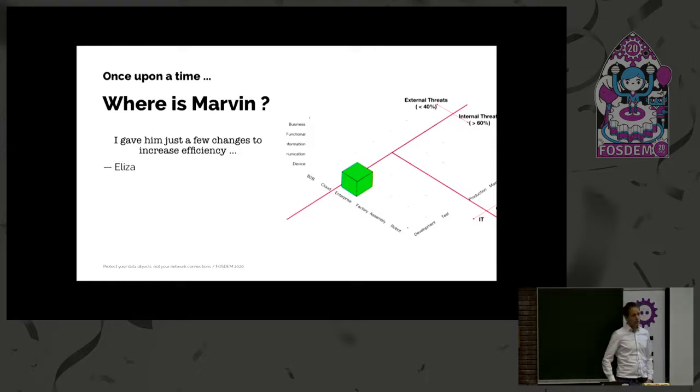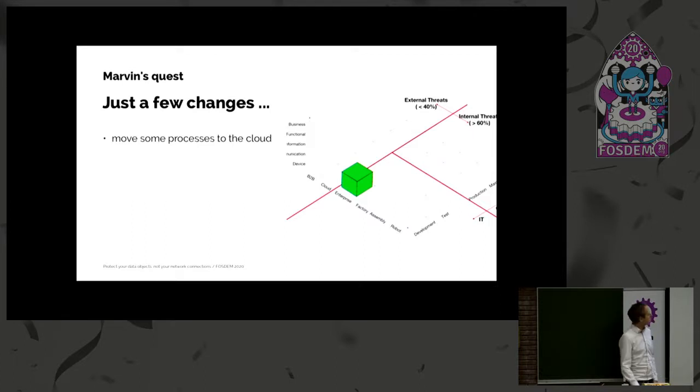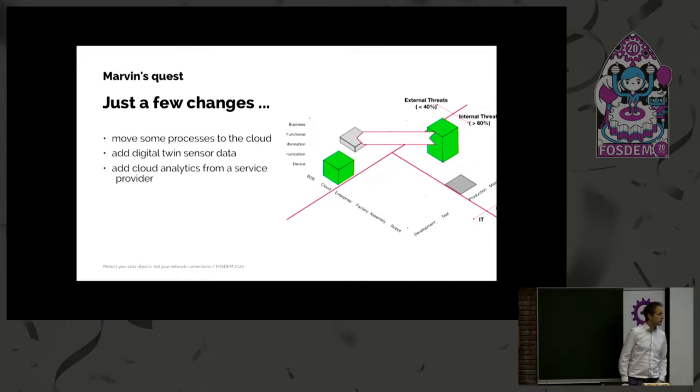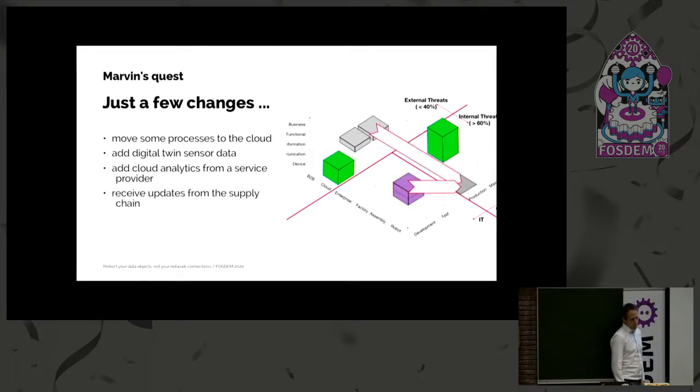So I just gave him a few things to do to increase our efficiency. And I asked her, what exactly was that? And she said, well, we just wanted to move some of our processes to the cloud. So it's very easy. You just move that box over there. Then we wanted to have this digital twin data sensor data because we wanted to improve our product with the data from our production line. The third item was that we wanted to have some cloud analytics for our factory to have some predictive maintenance data. And last but not least, we wanted to receive data from the supply chain and we wanted to actually also give back data to the supply chain, not speaking about software updates, which is another topic.